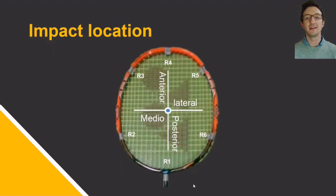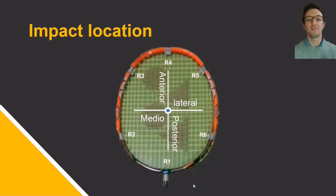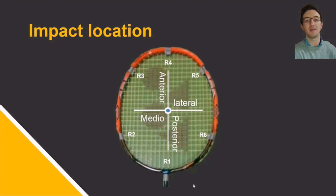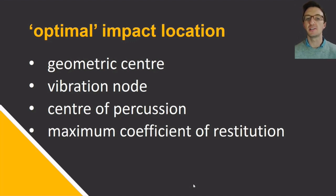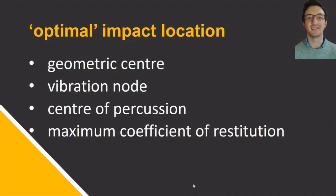The main focus of this video is the effect of impact location. Before investigating this, it is useful to fill in background information on the various theoretical methods of defining optimal impact location in bat or racket sports. A few have been theoretically proposed: the geometric centre, the vibration node, the centre of percussion, and the maximum apparent coefficient of restitution. These typically each occur at different locations on the racket face.